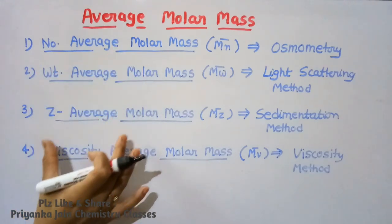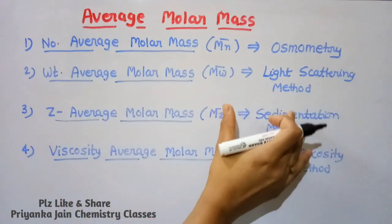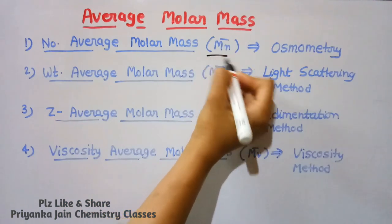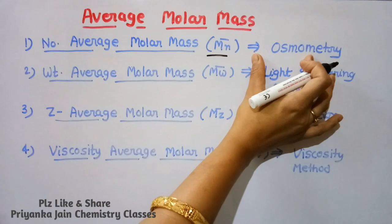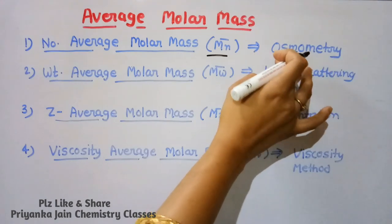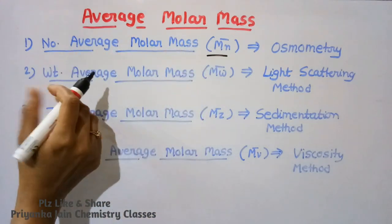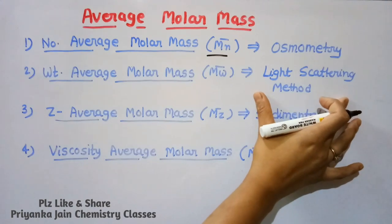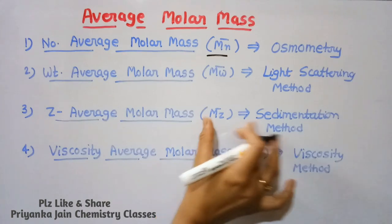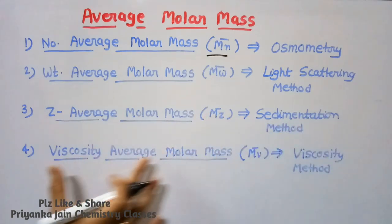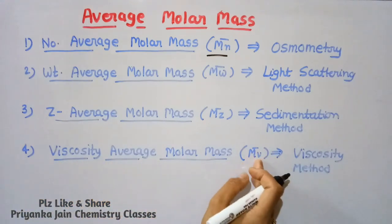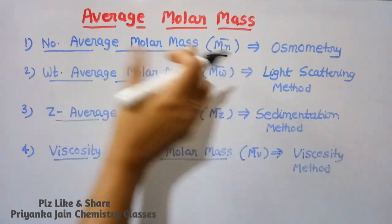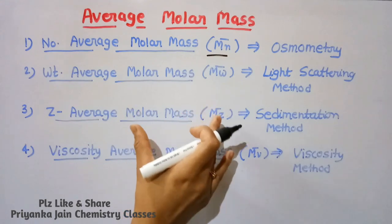There are four different types of average molecular weights of polymers, each arising from a different method. Number one is number average molar mass, denoted Mn, obtained by osmometry. Number two is weight average molar mass, denoted Mw, obtained by light scattering. Number three is z average molar mass, denoted Mz, obtained by sedimentation. Number four is viscosity average molar mass, denoted Mv, obtained by the viscosity method.